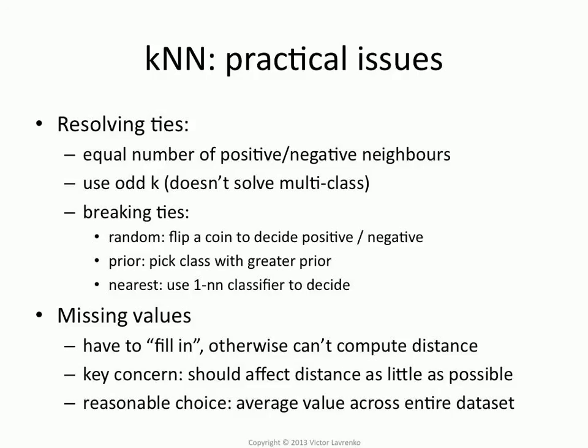When you're trying to fill in missing values, the strategy you want to use is to perturb the distances as little as possible. One reasonable choice is to pick the average value across the entire data set and use that instead of the missing value. That has some bad downsides, but so does every other imputation strategy. So you have to do something, and using the average is a reasonable choice.